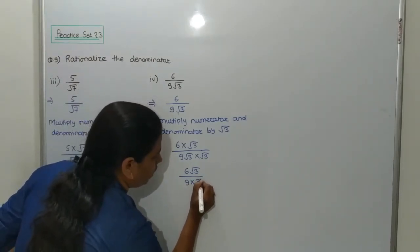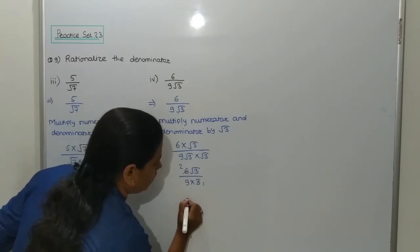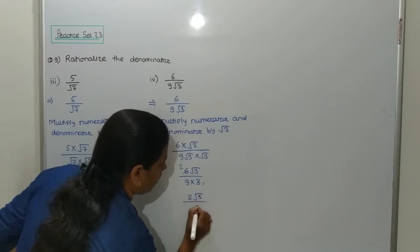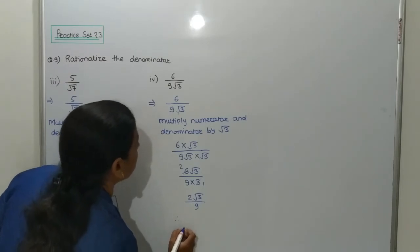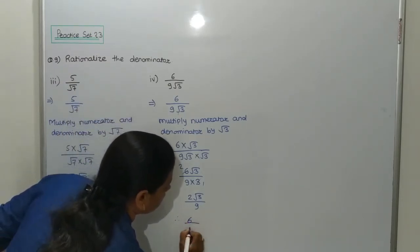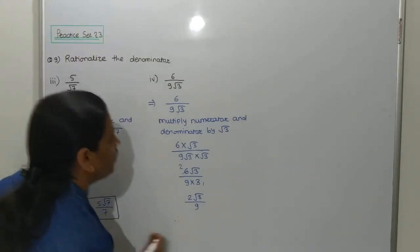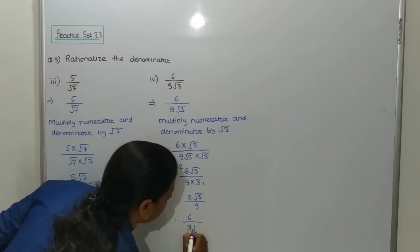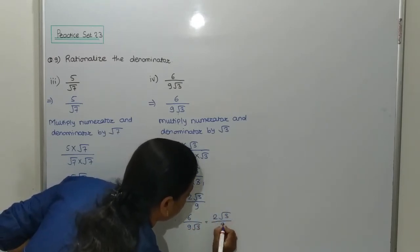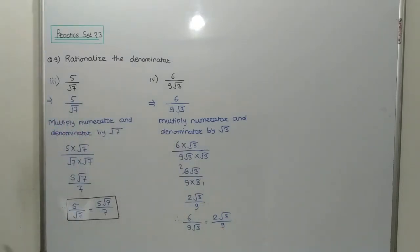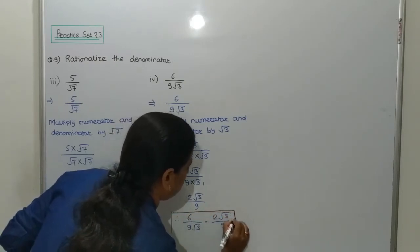Now simplifying: 6 root 3 upon 9 into 3, which is 6 root 3 upon 27. Dividing: 3 ones are 3, 3 twos are 6, so we get 2 root 3 upon 9. Therefore, 6 upon 9 root 3 is equal to 2 root 3 upon 9. This is the final answer of question number 4.